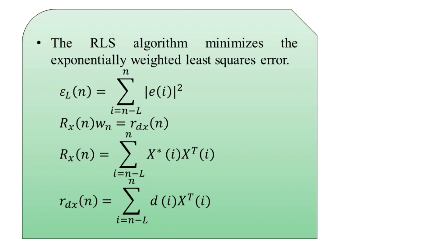The solutions are found from the equation: the autocorrelation matrix R_x(n) multiplied by the filter coefficient weight vector w_n equals the cross-correlation vector r_dx(n). The autocorrelation matrix R_x(n) equals the summation from i = n minus L to n of the complex conjugate of x(i) multiplied by the transpose of x(i). The cross-correlation r_dx(n) equals the summation from i = n minus L to n of the desired signal d(i) multiplied by the complex conjugate of x(i).